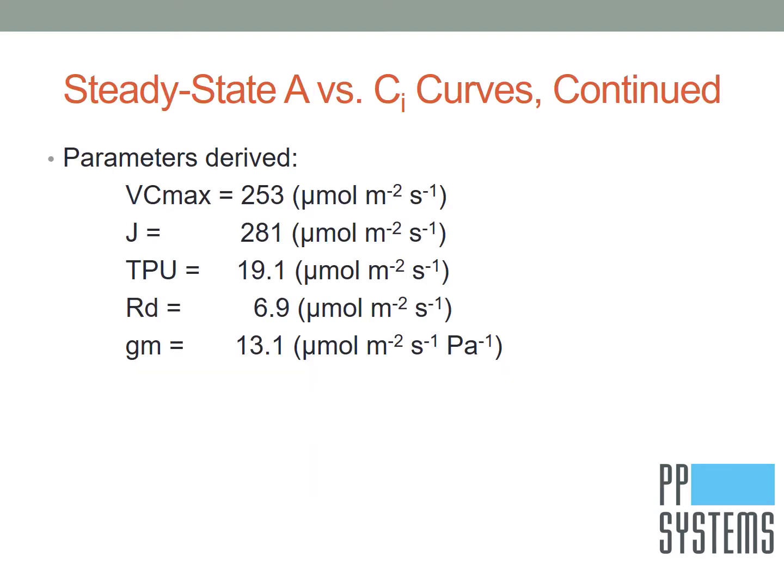Using the Sharkey utility program, we can now derive the maximum carboxylation capacity of Rubisco, electron transport rate, triose phosphate utilization rate, respiration rate, and mesophyll conductance. Also note that during these curves, the stomatal conductance is often not constant nor really even steady at each data point.